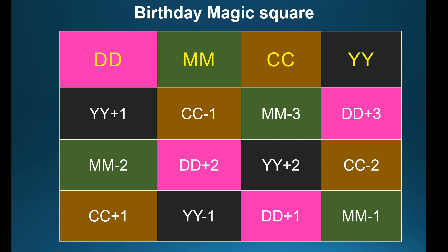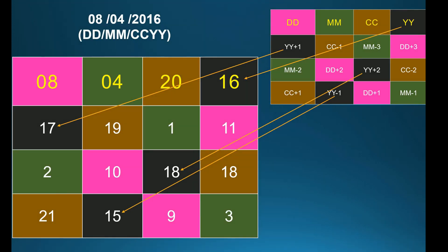Next is YY. For YY, the remaining columns are: YY minus 1, YY plus 2, YY plus 1. Substituting — YY is 16 — you get 15, 18, 17.